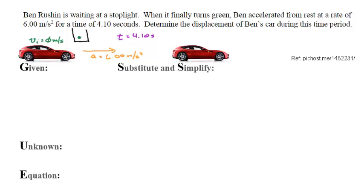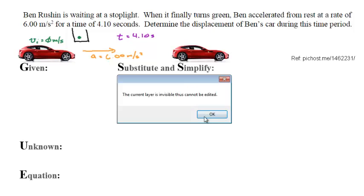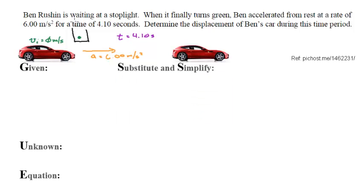Determine the displacement of Ben's car during this time period. I've diagrammed with my little red Ferrari the velocity initial is 0 meters per second, and I know that because he is waiting. When it turns green, he accelerates for 6.00 meters per second squared for 4.10 seconds.